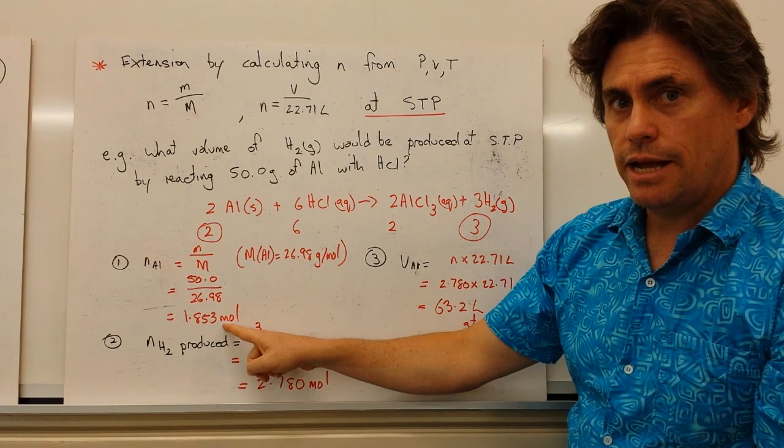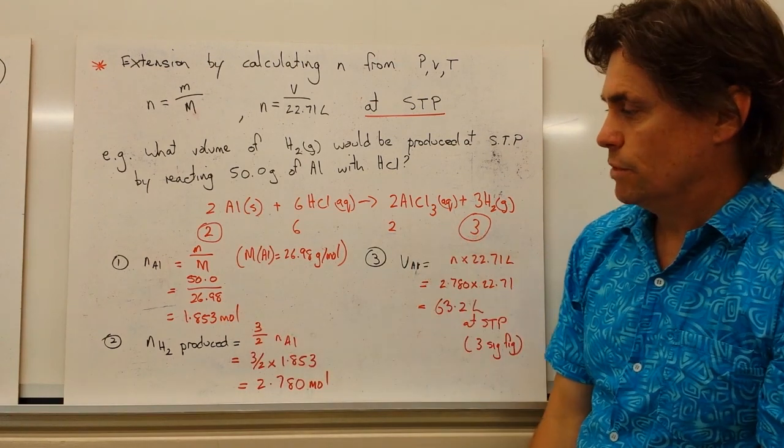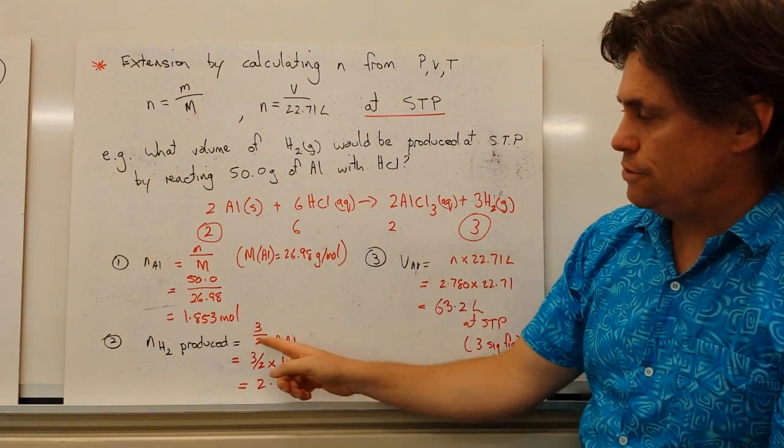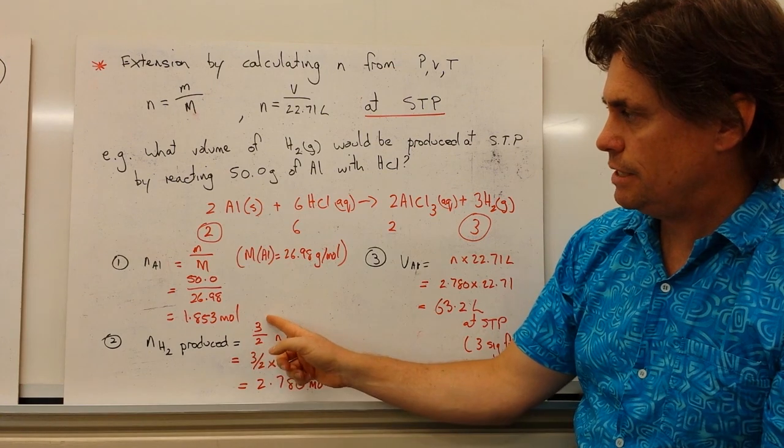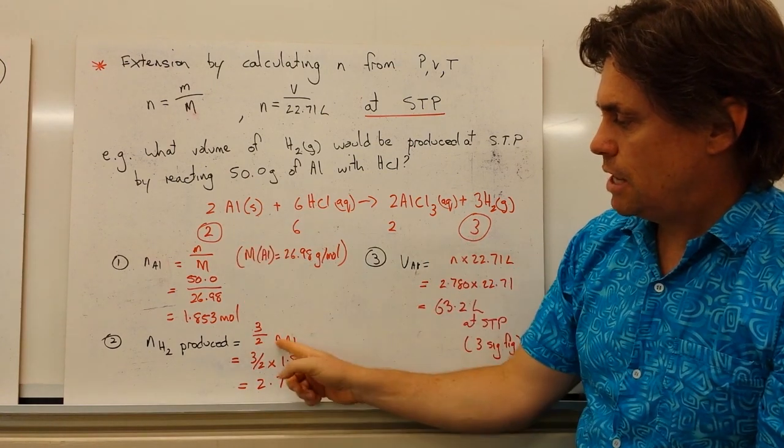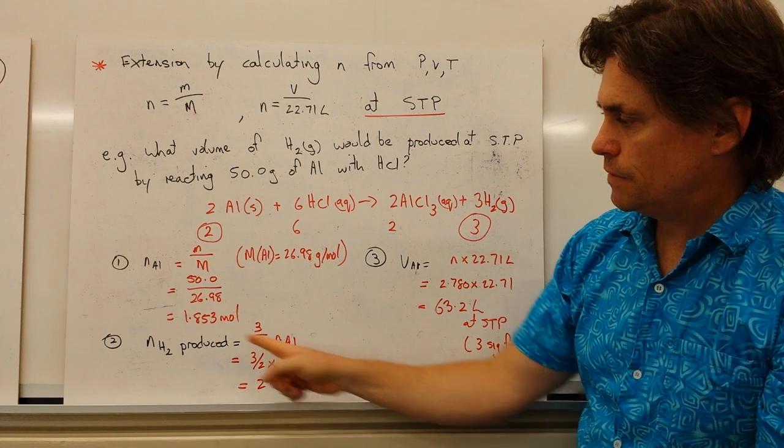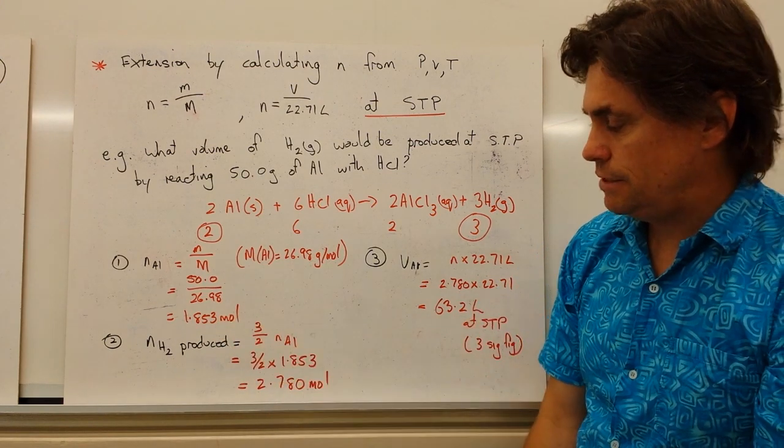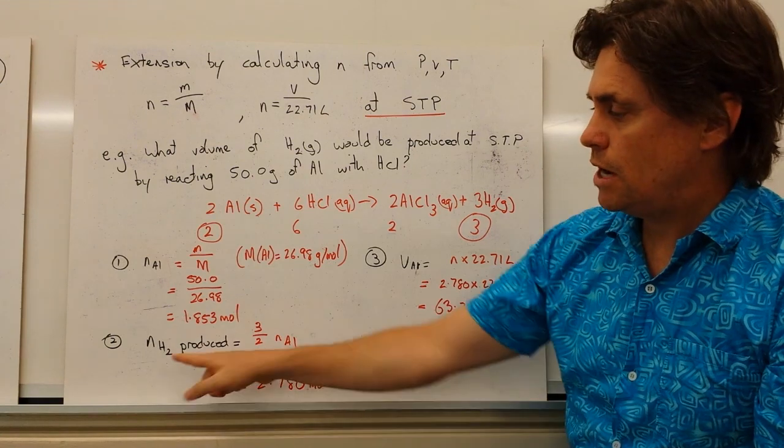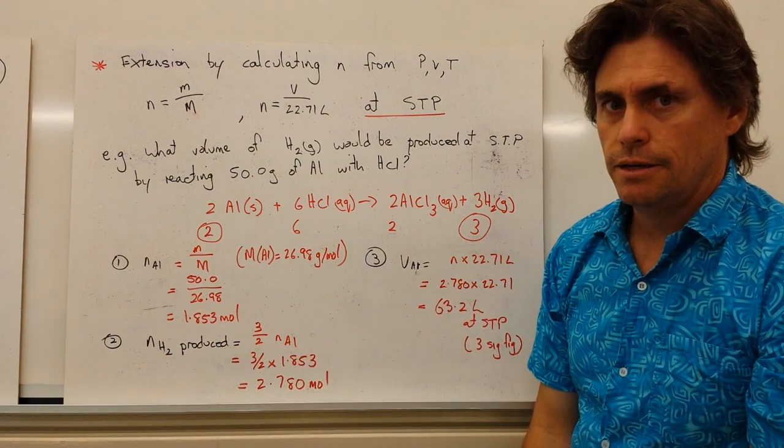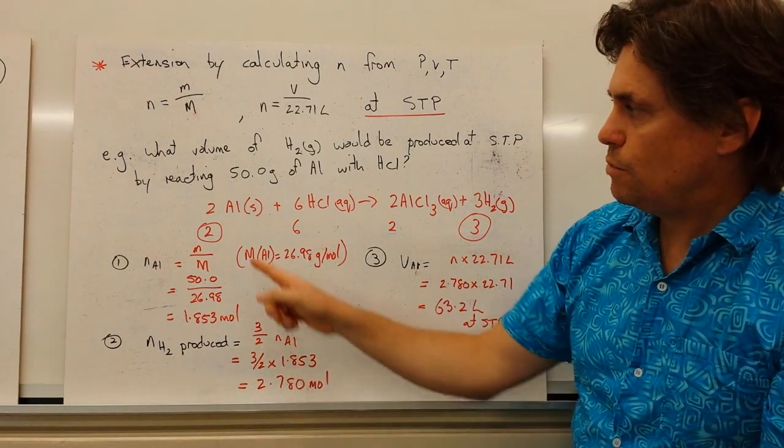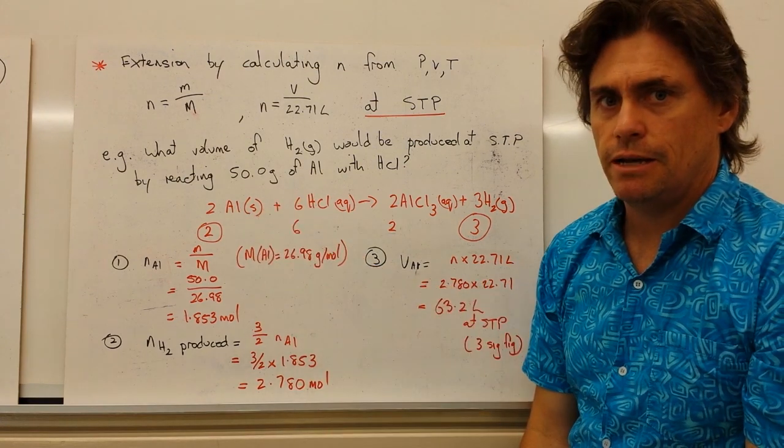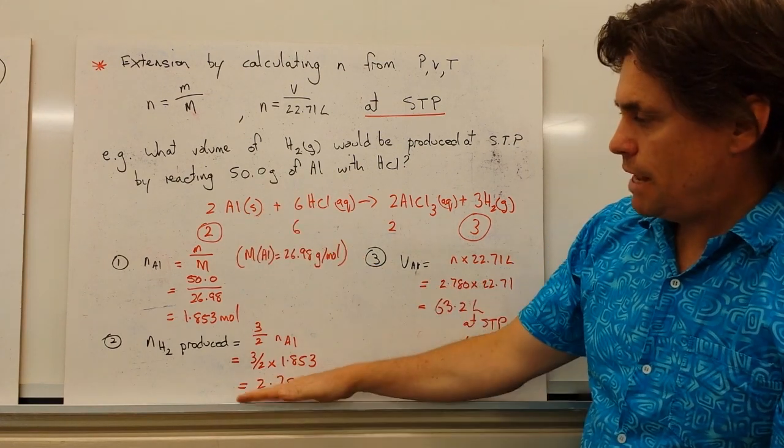So we've got 1.853 moles. So we need to work out how many moles of hydrogen we produce. And to do that, we use our ratio here, 3 over 2 times the number of moles of aluminium, the 1.853 here, which gives us 2.780 moles of hydrogen being produced. So that's produced when we use 50.0 grams of aluminium. So we've now got N.